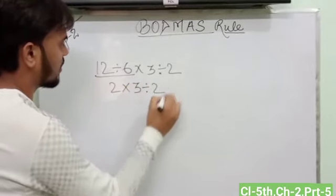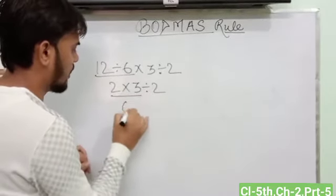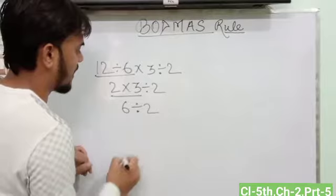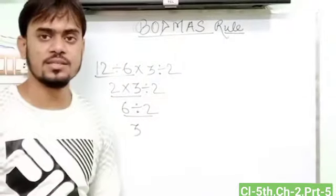So 2 into 3 divided 2. Now solve this one. So 2 into 3 is equal to 6 divided 2. 6 divided 2. The result is 3.